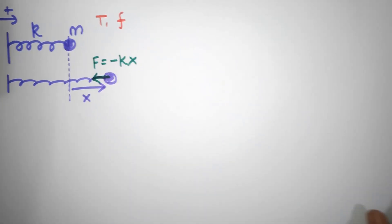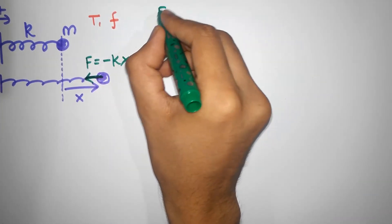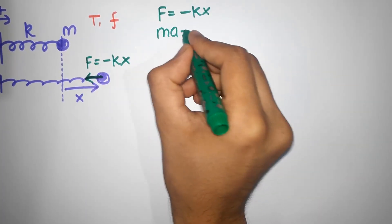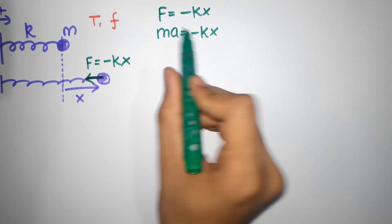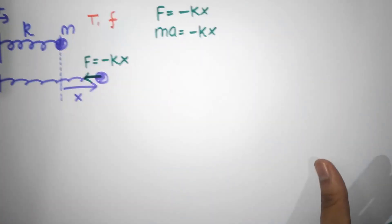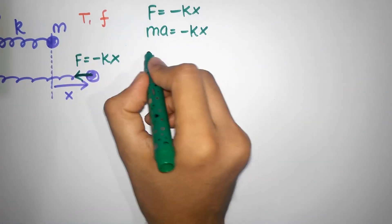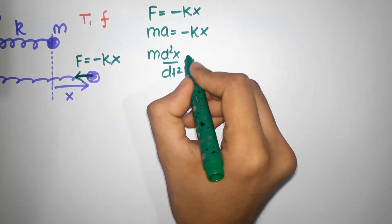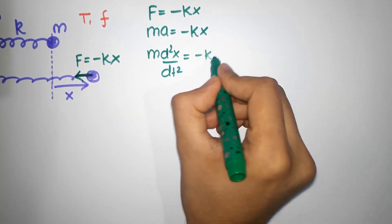So you can now apply Newton's second law. F equals minus KX. So MA equals minus KX. Notice it's a restoring force and a simple harmonic motion. Therefore, it's going to be M D square X by DT squared equals minus KX.